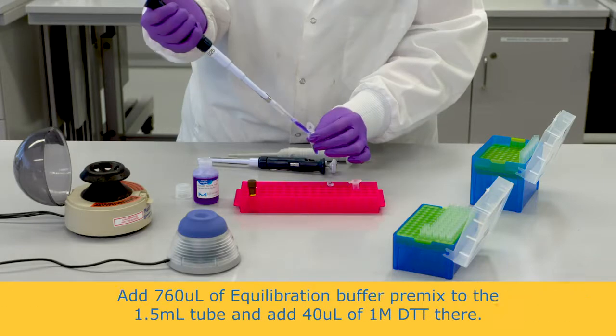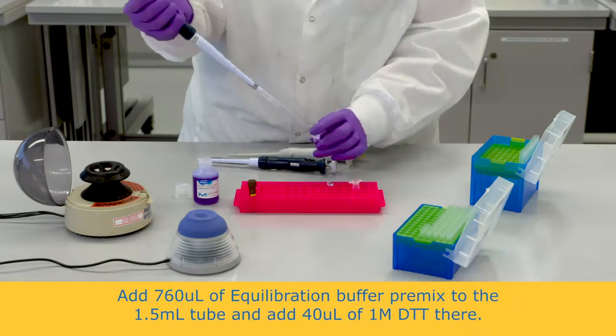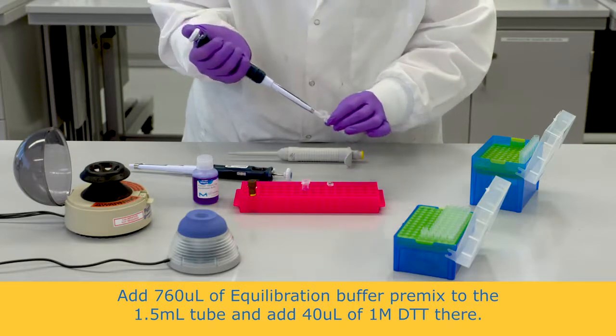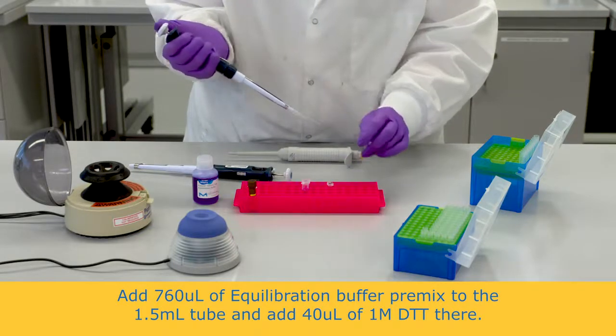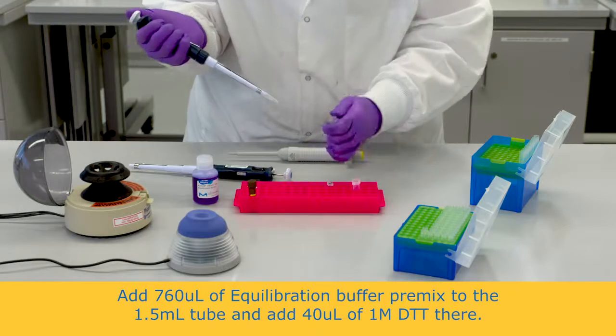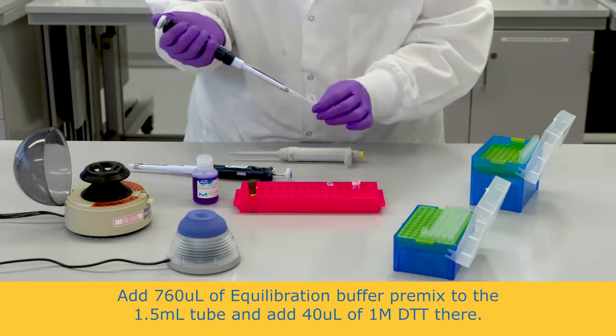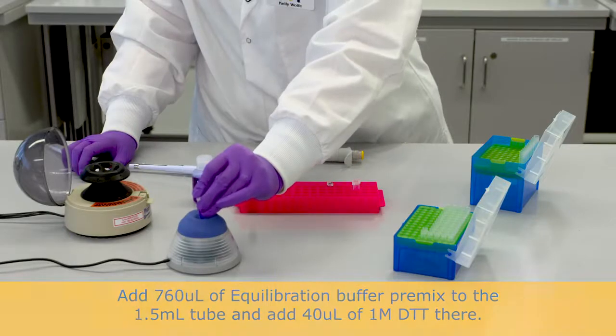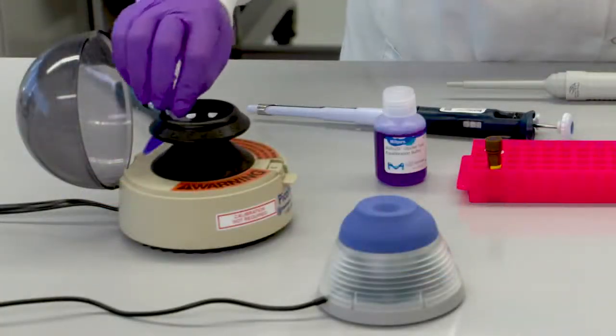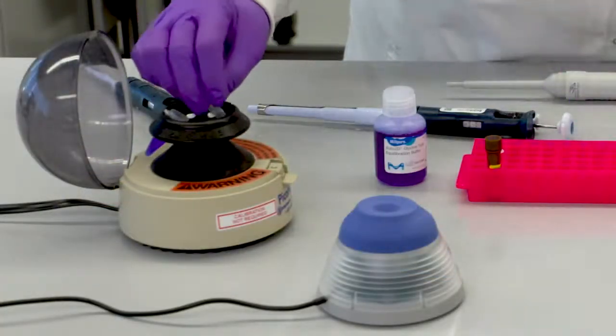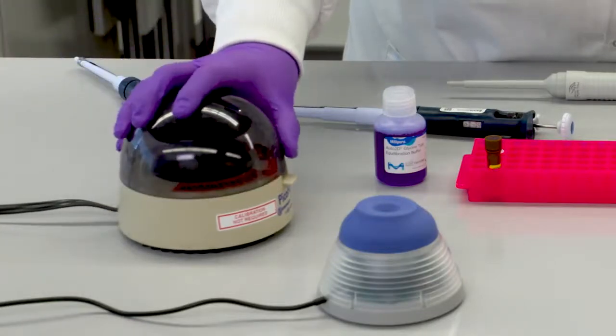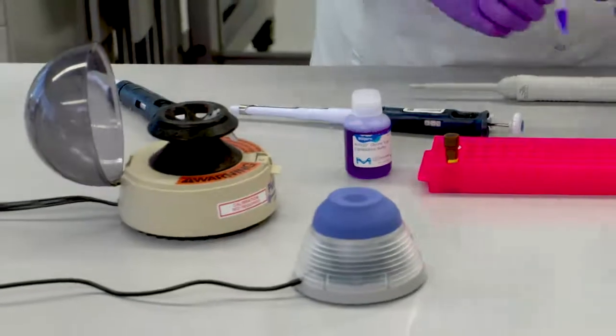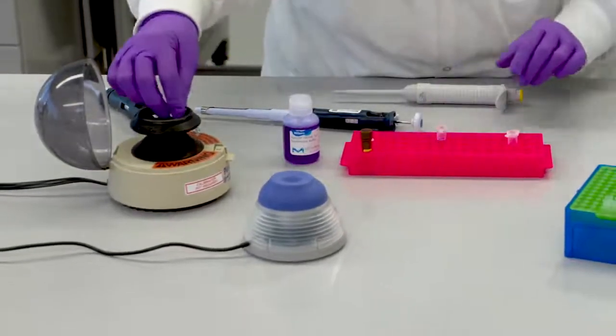Add 760 microliters of equilibration buffer premix to a new 1.5 milliliter tube, then add 40 microliters of 1 molar DTT and mix by vortexing. Spin both tubes briefly. These are the working rehydration solution and working equilibration buffer. All other solutions needed are provided in the reagent kit.